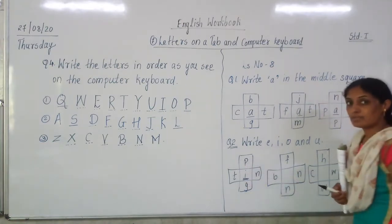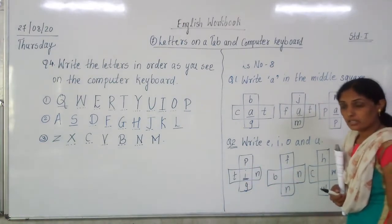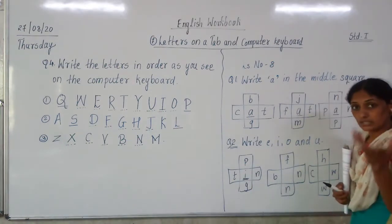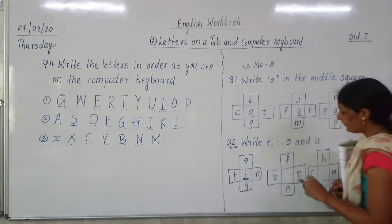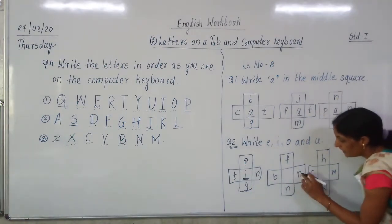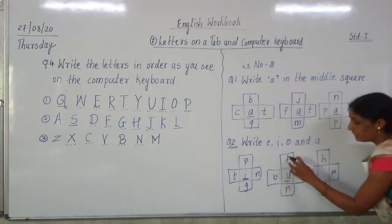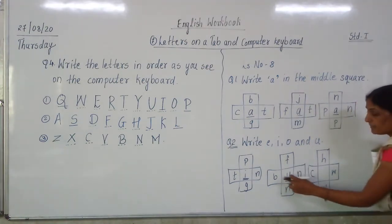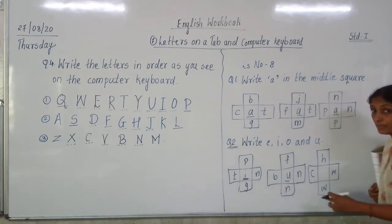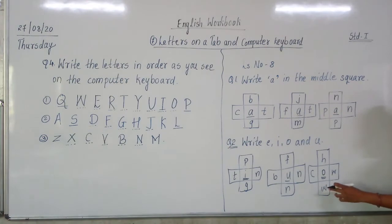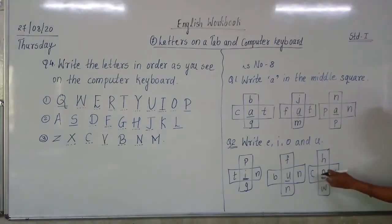P-I-G — pig is an animal. T-I-N-T — a tint is a thing. Now F, N is given. If I write the letter U in the middle it will become F-U-N and B-U-N. If I write O in the middle square it will become H-O-W — how, and C-O-W — cow. Have you understood?